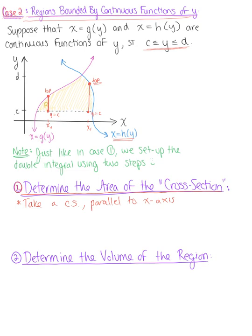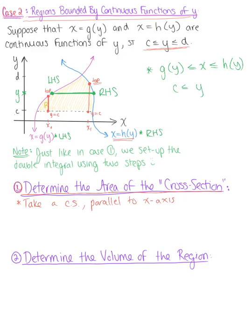In other words, we take a cross section for a y value. Choosing any arbitrary y between c and d, no matter where you place this cross section, h of y is always the right-hand curve and g of y is always the left-hand curve. So we can conclude that g(y) ≤ x ≤ h(y) and c ≤ y ≤ d. The bounds of x contain functions while the bounds of y are constant, which implies we want to use the order dx dy.